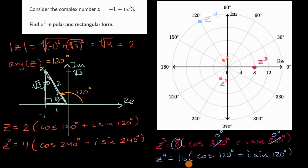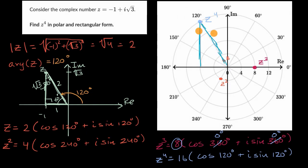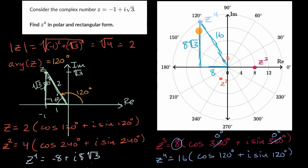We've represented z to the fourth in polar form: 16 times the cosine of 120 degrees plus i sine of 120 degrees. Now we just need to convert to rectangular form. We can construct another 30-60-90 triangle — the hypotenuse has length 16, the short side is half of that, which is eight, and the long side is square root of three times eight, so eight square roots of three. Therefore, z to the fourth in rectangular form is negative eight plus i times eight square roots of three.